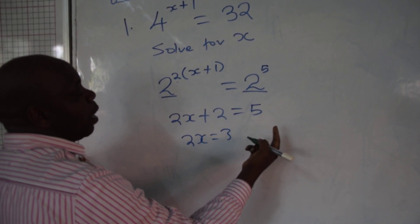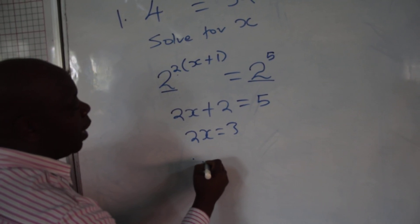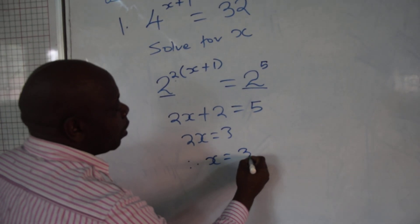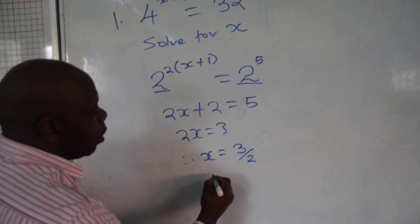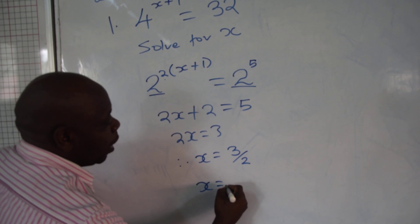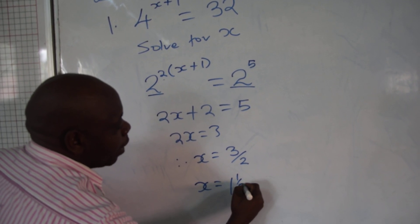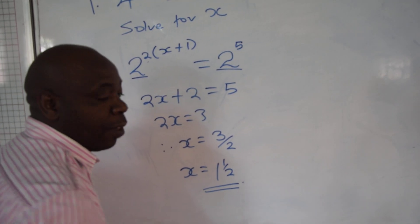If you take these two on this other side, you minus. And therefore, x is equal to 3 over 2. And the answer therefore is x equals 1 and a half. Is it clear, my students?